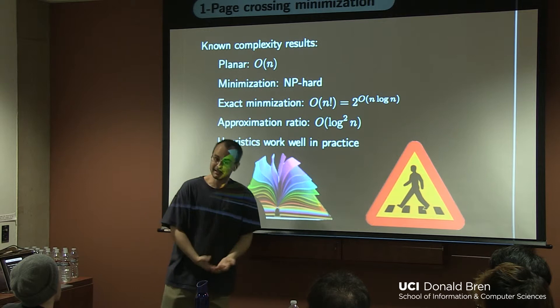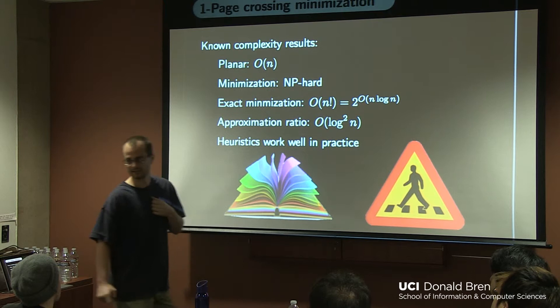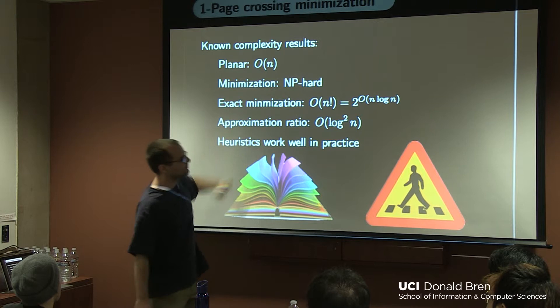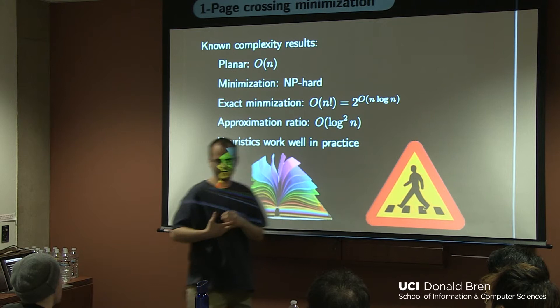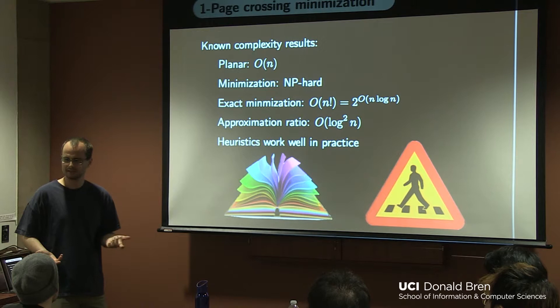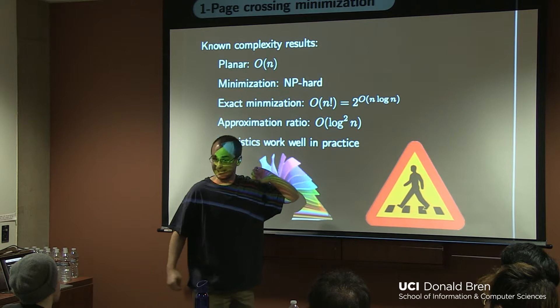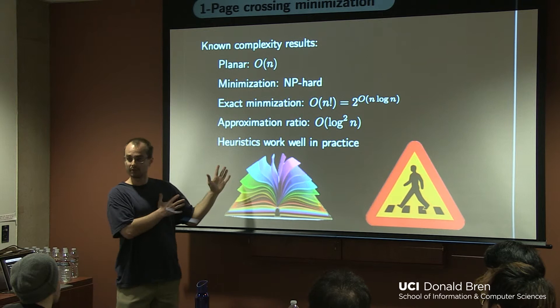There should be some way to attack this by dynamic programming or something like that and get a 2 to the n algorithm. But several of us have tried, not just at this school but at other schools, and nothing. You can approximate these to within a factor of log squared n, meaning you can get within log squared n times the minimum number of crossings. But that's unsatisfying because your approximations get worse as your problem size increases. But I should note, heuristics tend to work. And that's what we used when we are actually doing the crossing minimization for our disease networks.